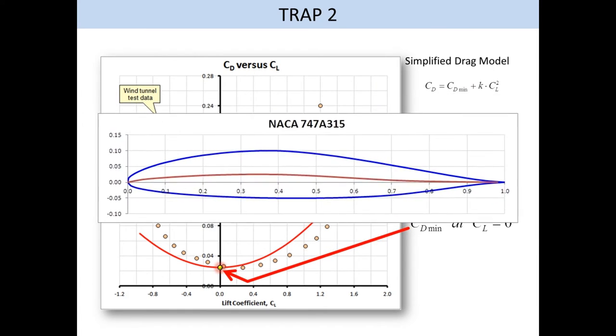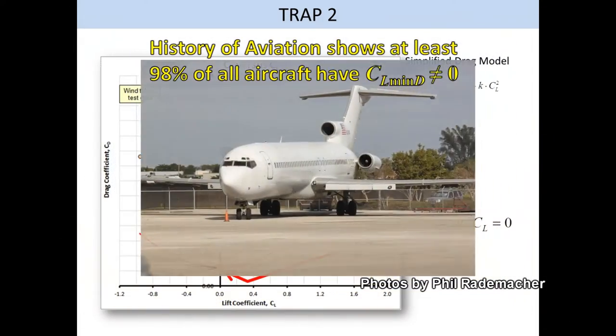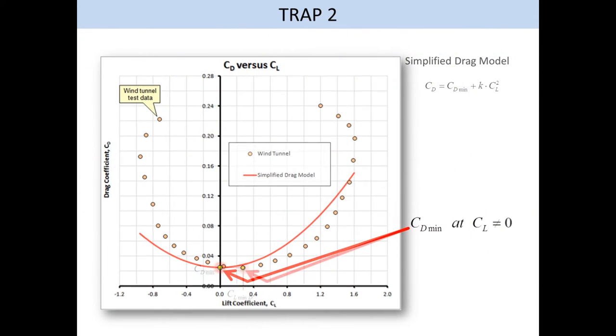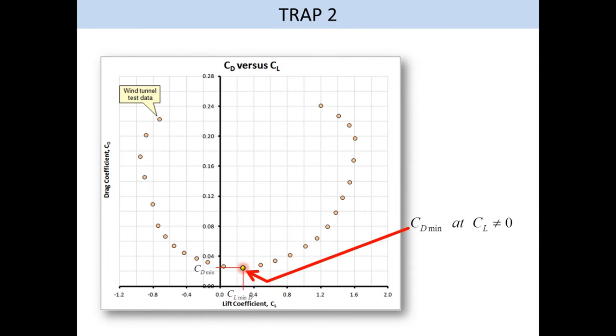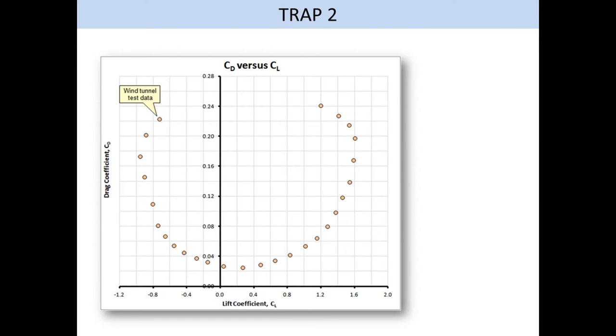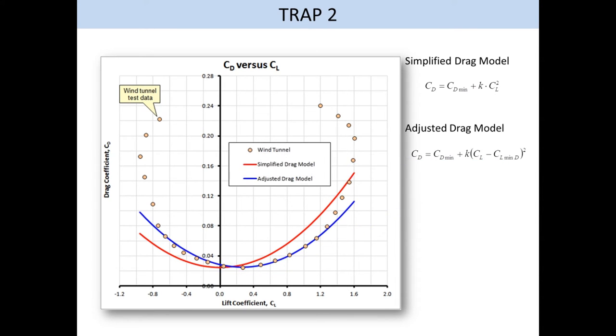However, for this airfoil, and this airfoil, and this plane, and this plane, and all of these planes, this assumption doesn't hold. The minimum drag occurs at non-zero lift coefficient for all of them. But what's the big deal, you ask? Well, this is the big deal. Here you see actual wind tunnel data for a real aircraft. If we try to model this data using the simplified model, you see the predicted matches the test data for only one lift coefficient. However, if we use the adjusted model, the improvement of the prediction is excellent, provided the lift coefficient is not too high.